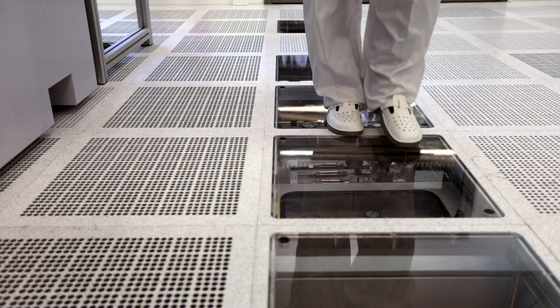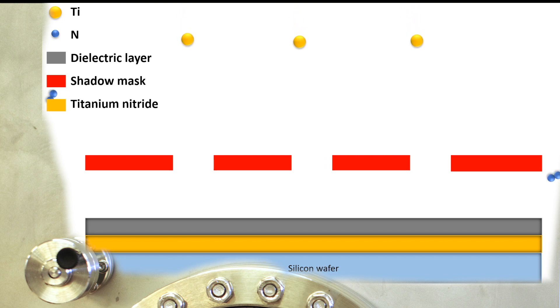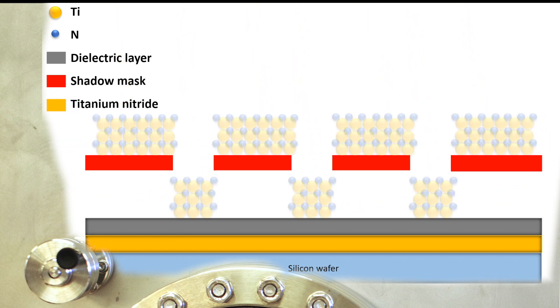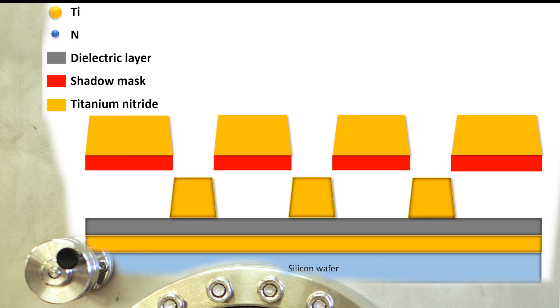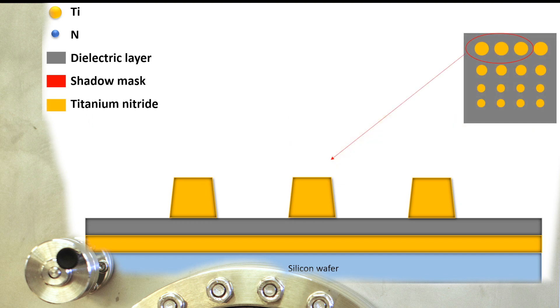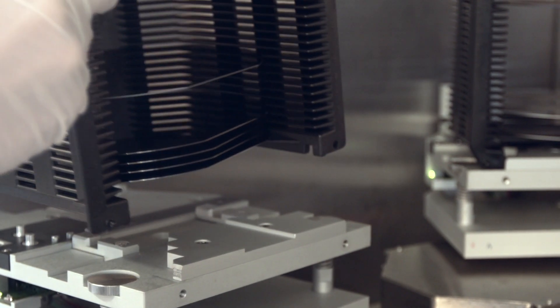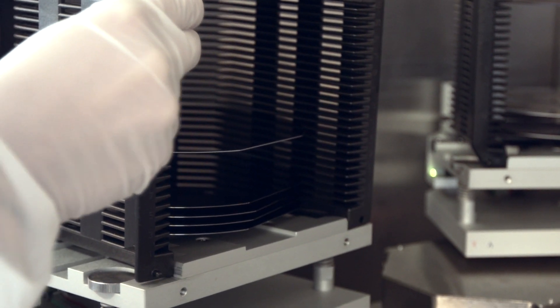Now we take out the wafer piece and go back to the titanium nitride sputter deposition tool. This time, we place a shadow mask on top of our wafer. Only regions where holes are in the shadow mask allow titanium nitride deposition on the substrate. The round holes in the mask are 0.1 to 0.4 millimeters in size, which are later used as a top electrode to connect our capacitors. The thin film capacitor fabrication is now finished.